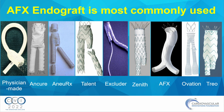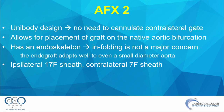Of all the stent grafts tried in case reports, the most common is the AFX device — now in its second version, AFX2. It is unibody, so there is no need to cannulate the contralateral gate. It allows placement on the native aortic bifurcation to avoid migration and preserves the aortic bifurcation. It has an endoskeleton, meaning the material is on the outside of the stent, allowing placement in a much smaller aorta than designed with less risk of material infolding.